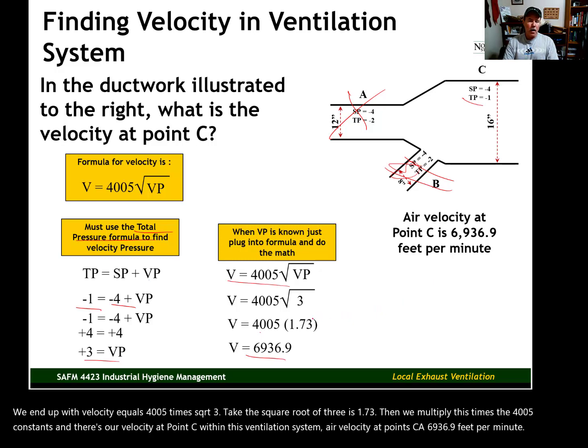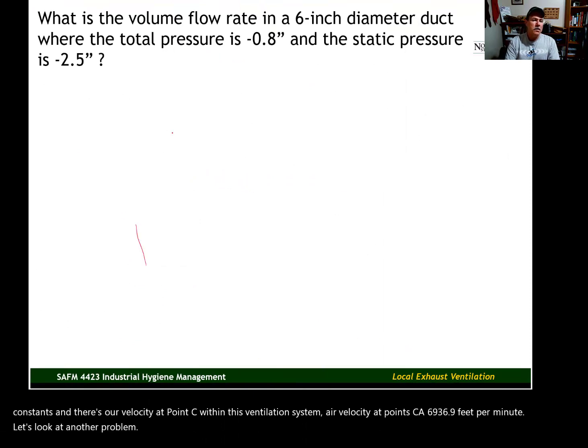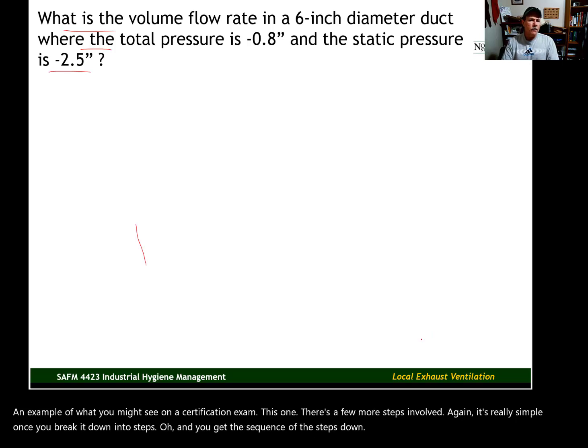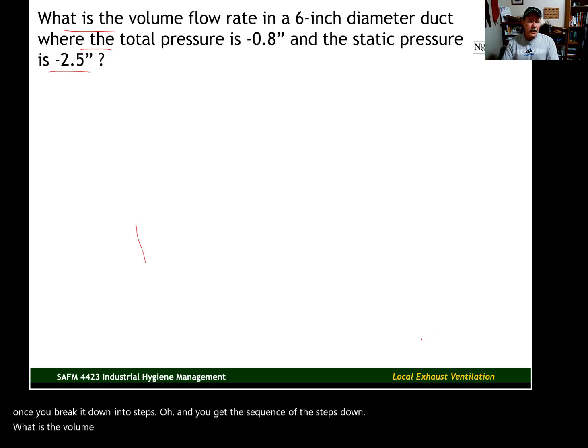Let's look at another problem. Also, an example of what you might see on a certification exam. This one, there's a few more steps involved. It's really simple once you break it down into steps, though, and you get the sequence of the steps down. What is the volume flow rate in a 6-inch diameter duct where the total pressure is negative 0.8 and the static pressure is negative 2.5 inches?